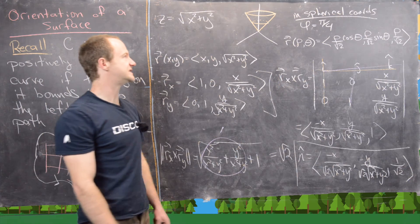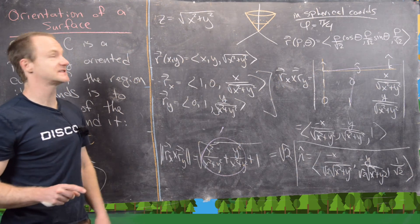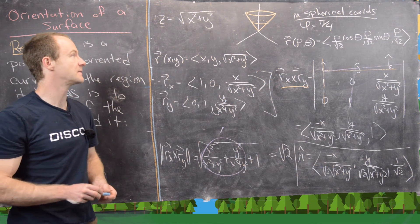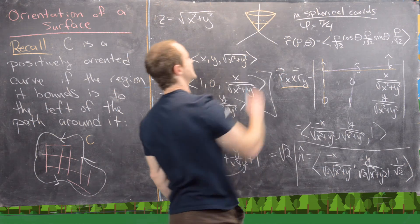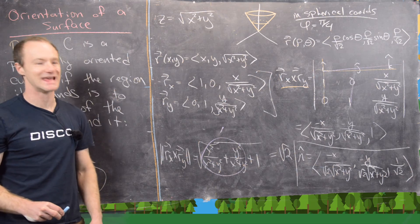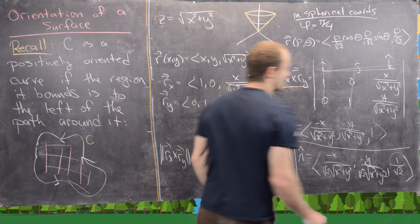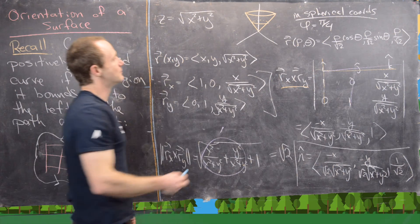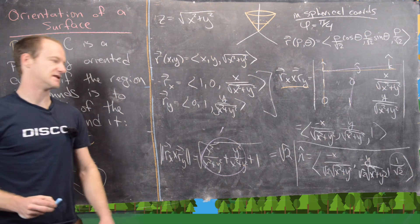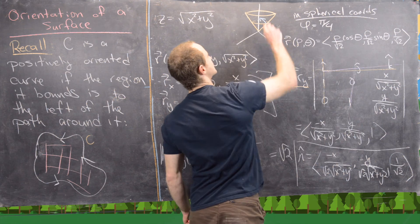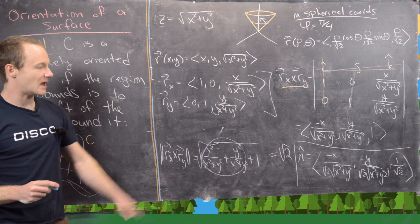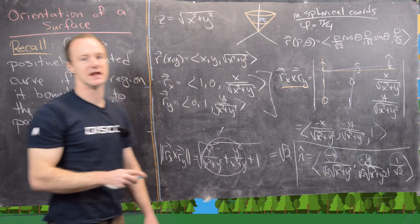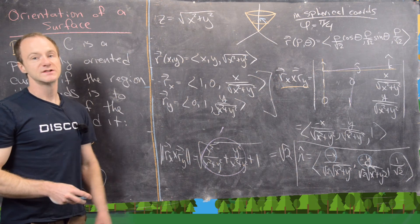The z-component being 1/sqrt(2) means this normal is pointing upward. But if it were pointing outward from the cone, it would point downward in z. That gives us a hint this vector is actually pointing inward toward the cone. Another hint is the negative signs in the x and y components, which indicate we're pointing toward the origin — exactly what would happen if we were pointing in toward the z-axis from the surface of the cone.